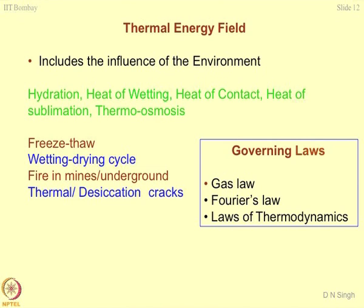The question is what laws you are going to use for these types of studies. V = KI is nothing but Darcy's law, a mechanical law where two mechanical energies are equated. When we talk about the thermo-energy field, the governing laws would be the gas law (PV = nRT), Fourier's law of heating and cooling, and the laws of thermodynamics — including Carnot cycles and Carnot engines. These concepts can be utilized in finding out the thermal equilibrium between soil and water, and soil and contaminants.